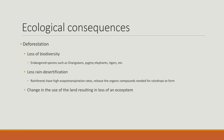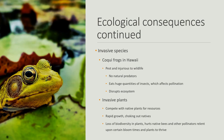Some ecological consequences of deforestation include loss of biodiversity — animals already endangered include orangutans, pygmy elephants, and tigers. This causes less rain or desertification. Rainforests have high evapotranspiration rates, which releases the organic compounds needed for raindrops to form, and the change in land use results in a loss of a full ecosystem. Invasive species such as the coqui frog in Hawaii are considered a pest — they have no natural predators, eat huge quantities of insects affecting pollination, and disrupt the ecosystem. Invasive plants compete with native plants for resources through rapid growth, choking out natives and hurting native bees and other pollinators reliant on certain bloom times.